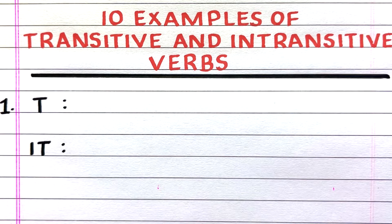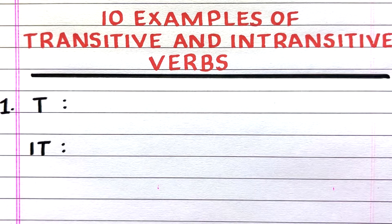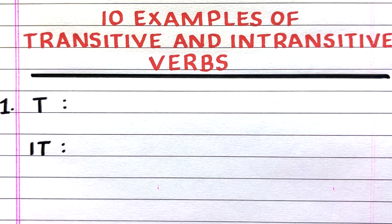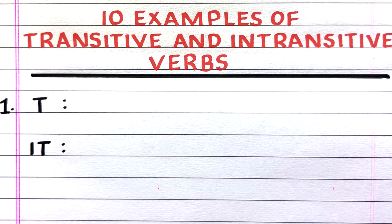Hello everyone, welcome to my channel 10 Lines Essay. A transitive verb is a verb that is used with a direct object, whereas an intransitive verb isn't used with a direct object. In this video, I'll write 10 examples of transitive and intransitive verbs. Let's get into the video.